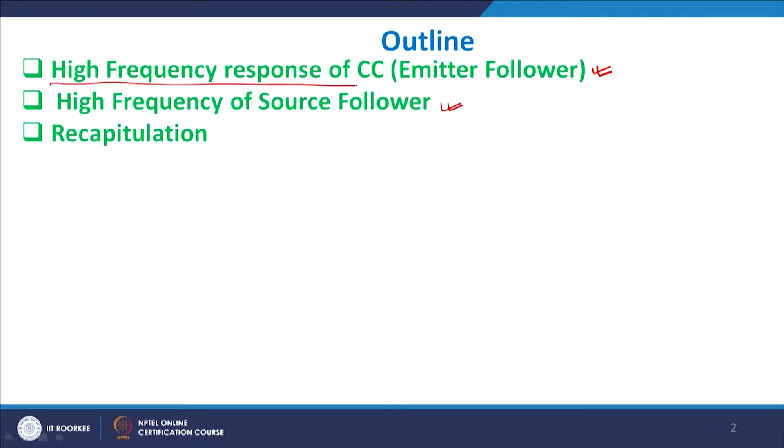We already know what these amplifiers are. For example, the source follower has a gain of 1; you take the output from the source of the amplifier and give input to the gate side. Typically the source output follows the gate output, and therefore it is referred to as a source follower.